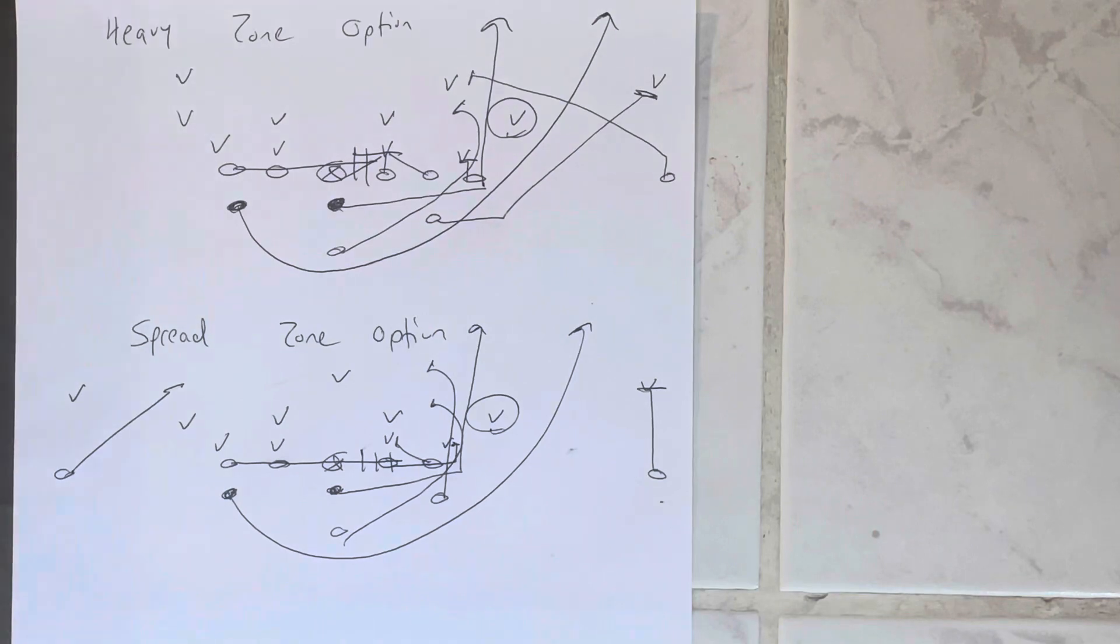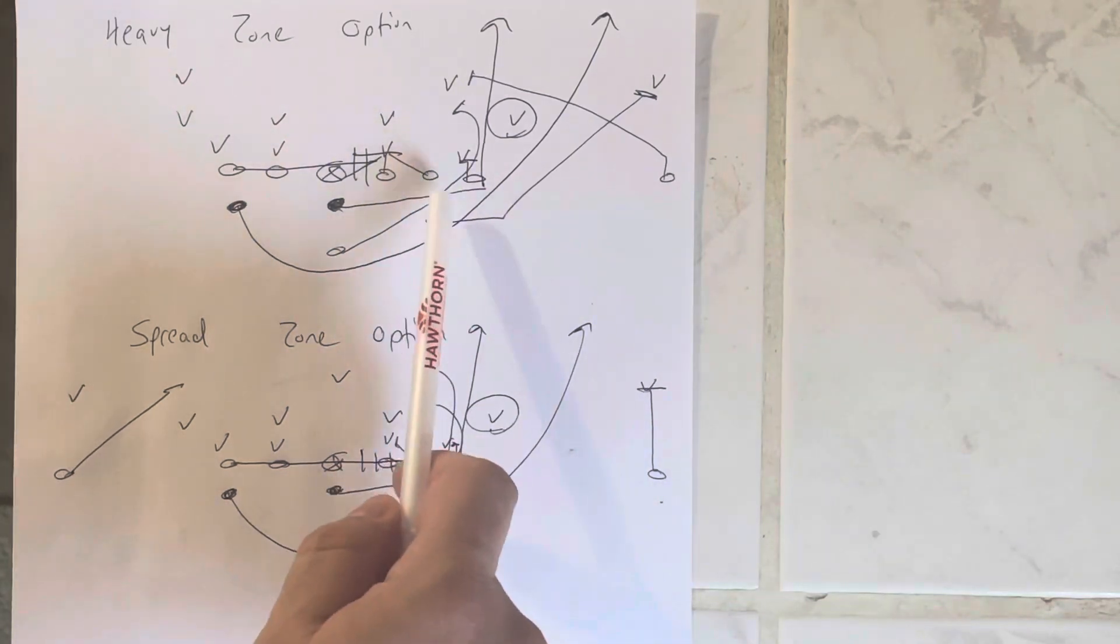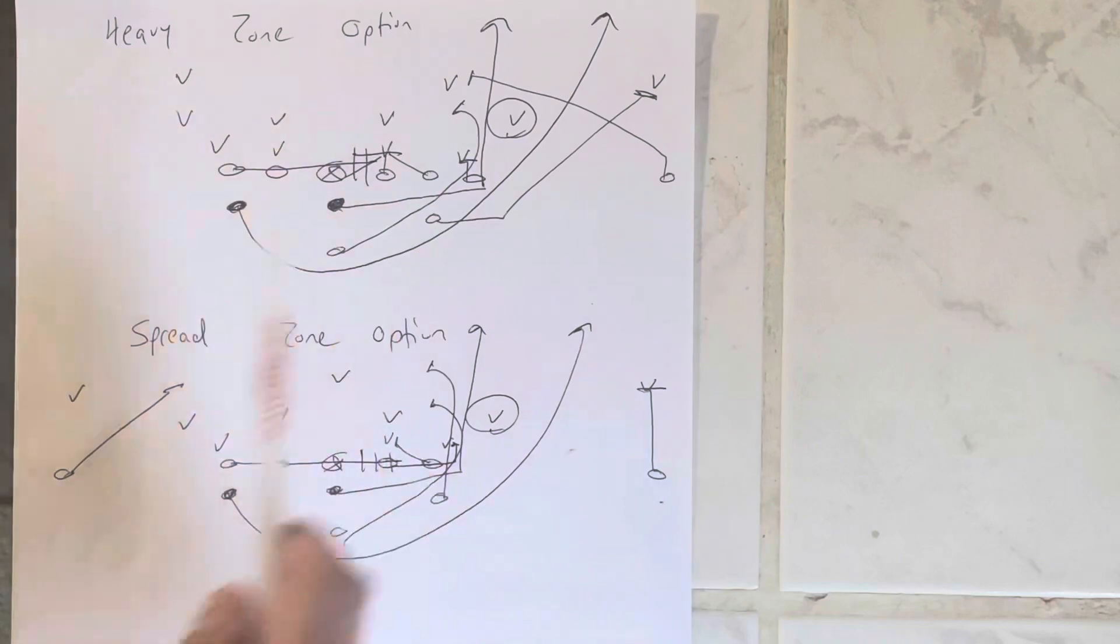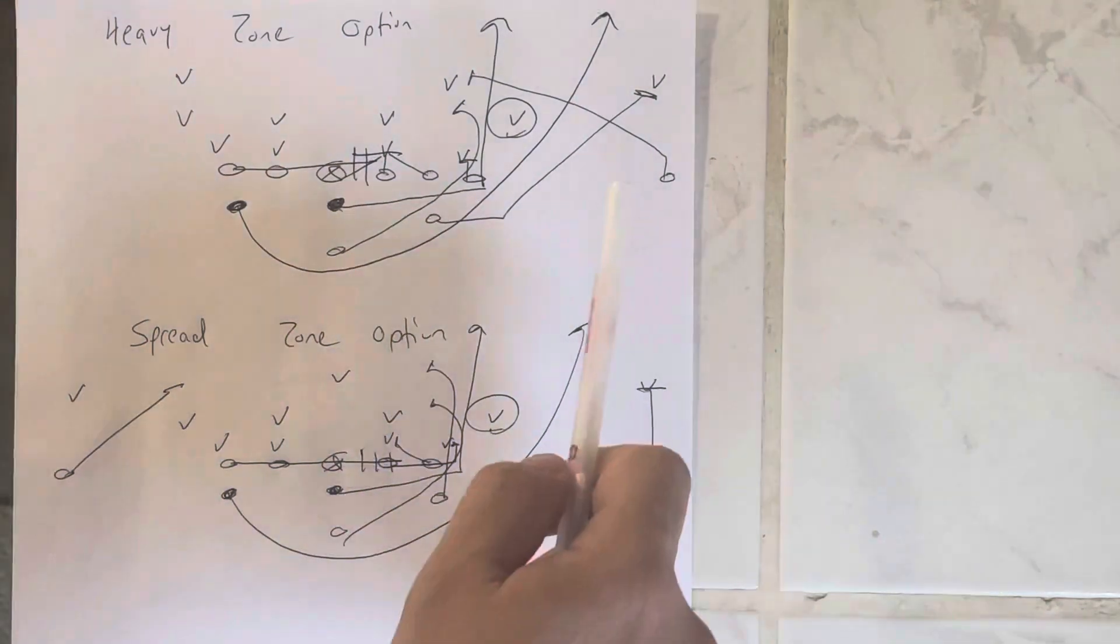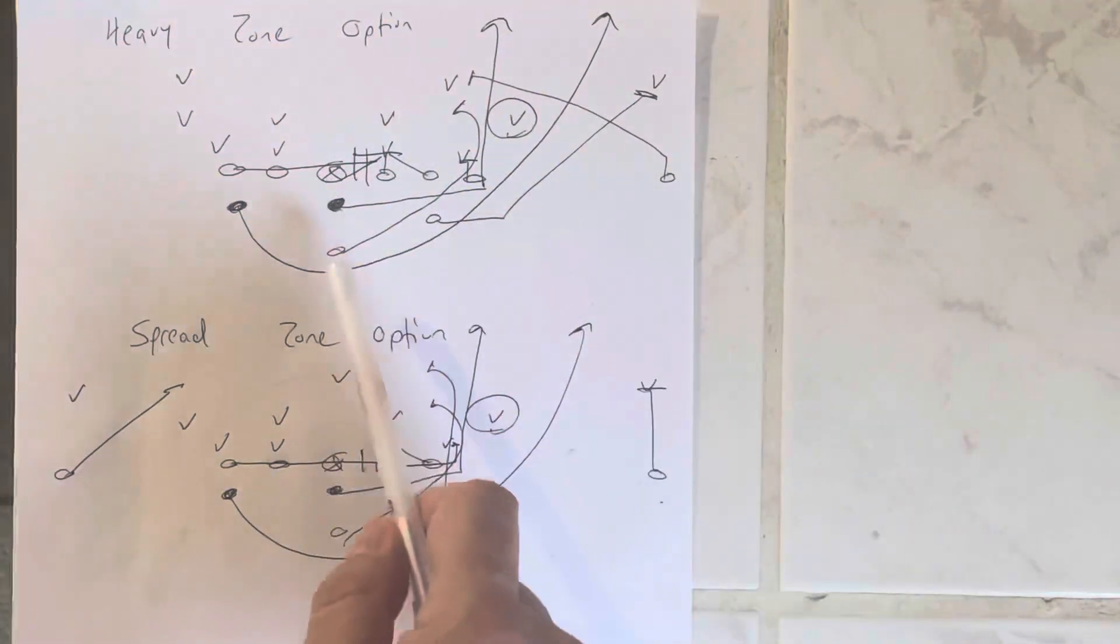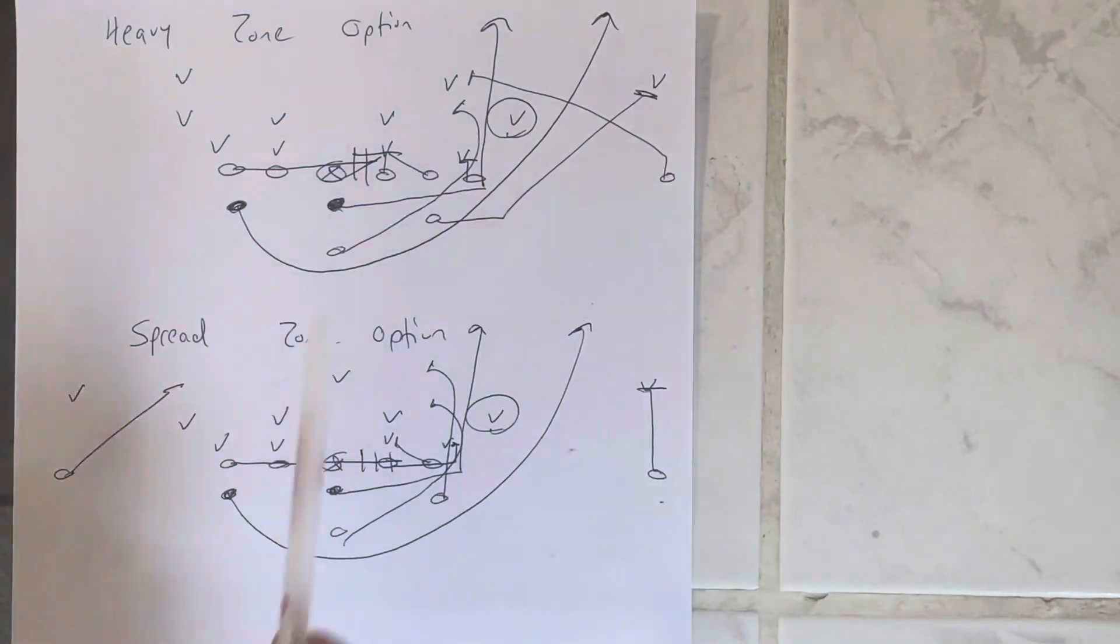Because you have to create surface to run the zone option. So here you've got the heavy tackle blocking down. You've got the tackle blocking down. You've got the wedge set on the action key with the double scoop on the backside. The receiver and the A-back will switch it on the perimeter if the safety's on the play side. The B-back checks the levels and then he'll end up walling off the mic when the mic runs over the top.